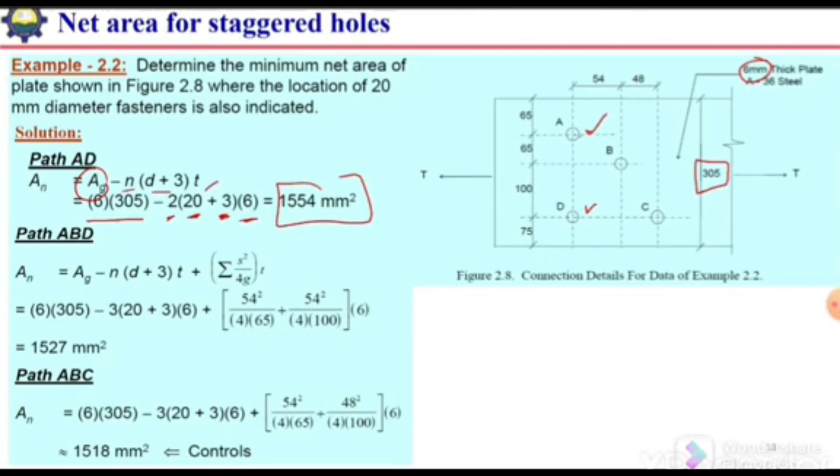Next, path ABD. Here again the gross area will remain the same, calculated by multiplying width and thickness: 6 multiplied by 305. Then we need to subtract the area of these three holes, so 3 times (diameter of bolt plus 3) times 6. We have subtracted the area of these three holes.